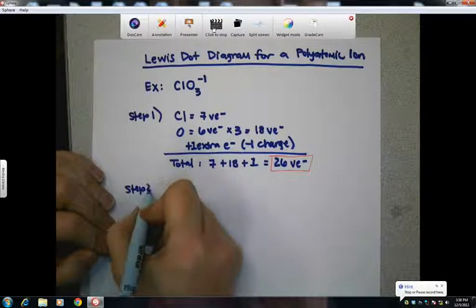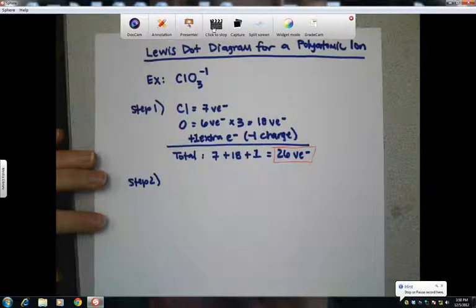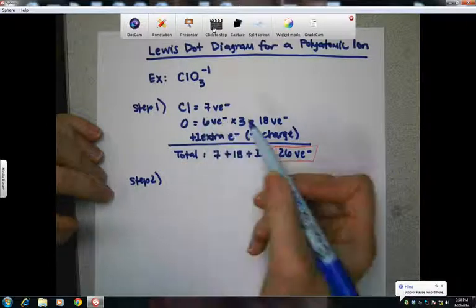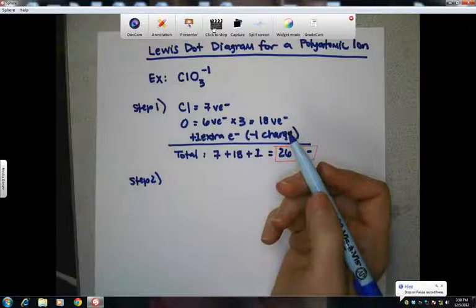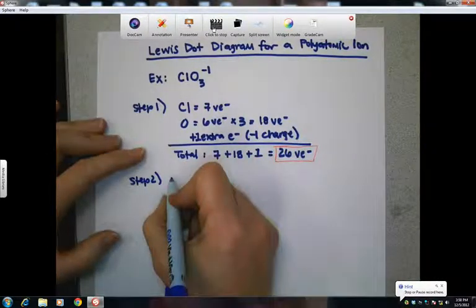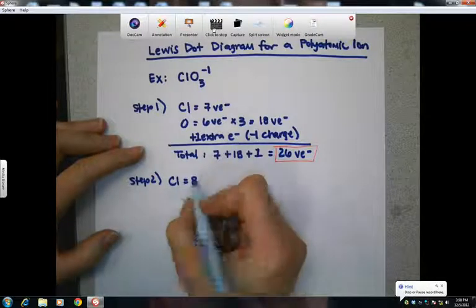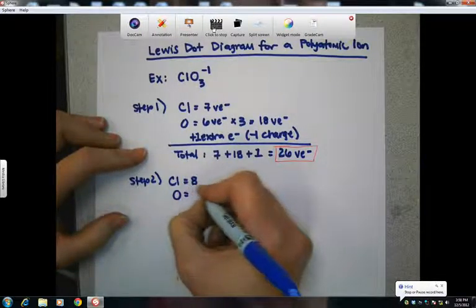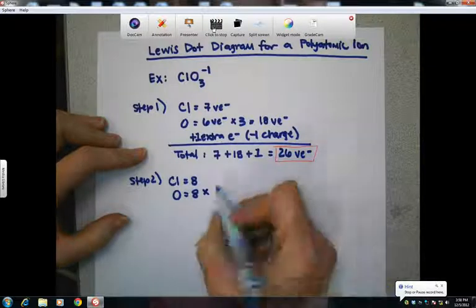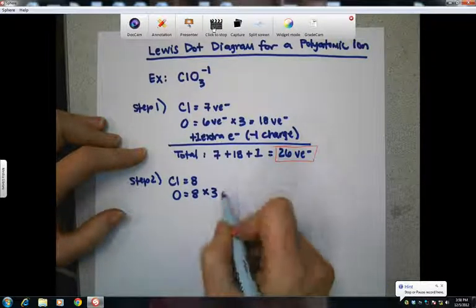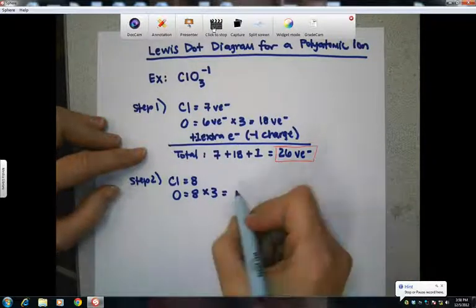All right, step two, we're going to go ahead and add up how many electrons each of these atoms would want if they could fulfill their octets. So chlorine would want eight valence electrons total. Oxygen also would want eight. And there are three of those. So eight times three is 24.